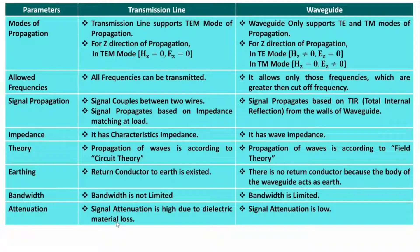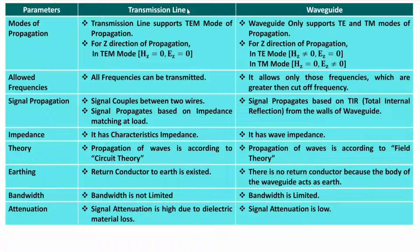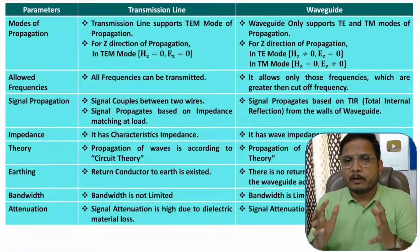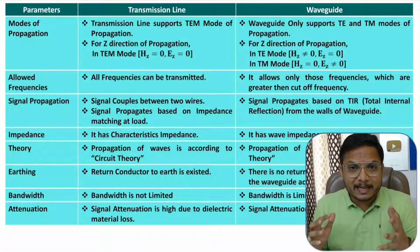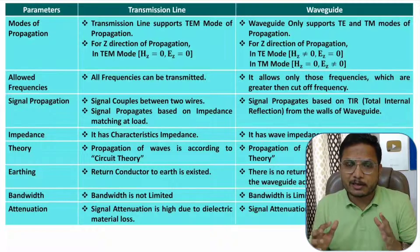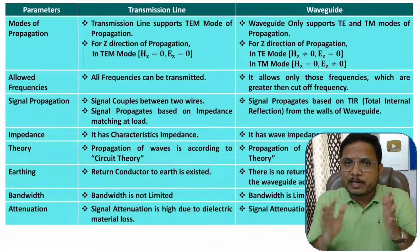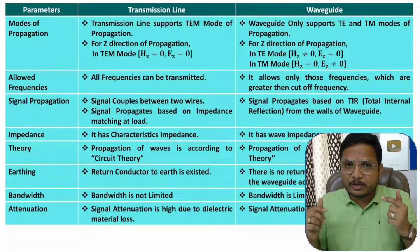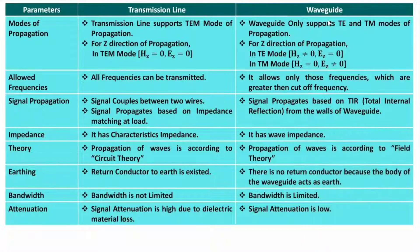The next parameter is attenuation. In a transmission line, signal propagates based on coupling, and through the dielectric material between two parallel conductors there will be signal loss, so transmission lines have higher attenuation. In a waveguide, signal propagates based on total internal reflection, which does not attenuate the signal as much. This is why, for microwave frequencies such as satellites and microwave circuits, waveguides are preferred — they have much lower attenuation.